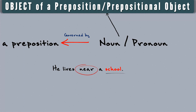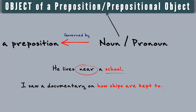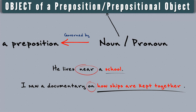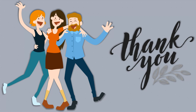When the object of a preposition is a noun clause, the whole clause is considered the object of the preposition. For example: 'I saw a documentary on how ships are kept together.' Here 'on' is the preposition, and the noun clause 'how ships are kept together' is the full object of the preposition — also called a prepositional object. And that's all for today — see you in the next class!